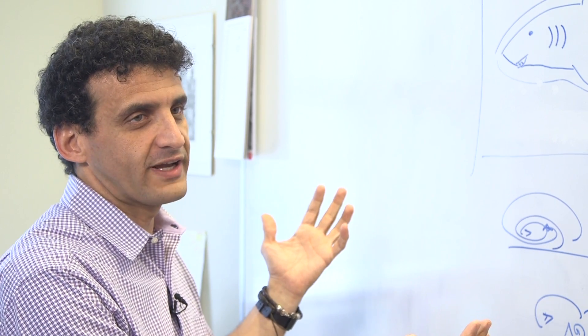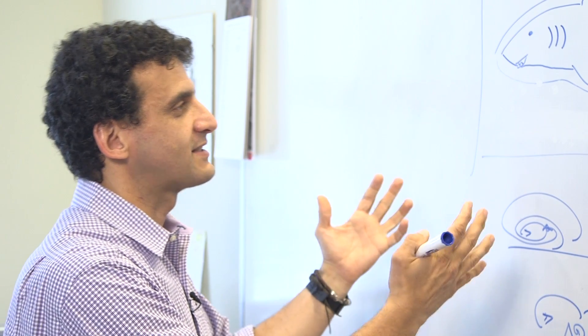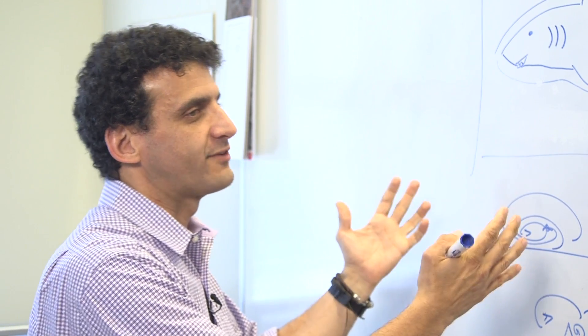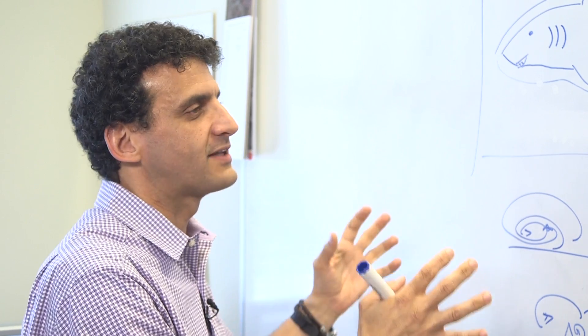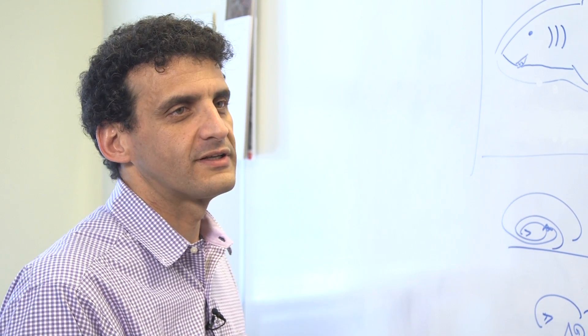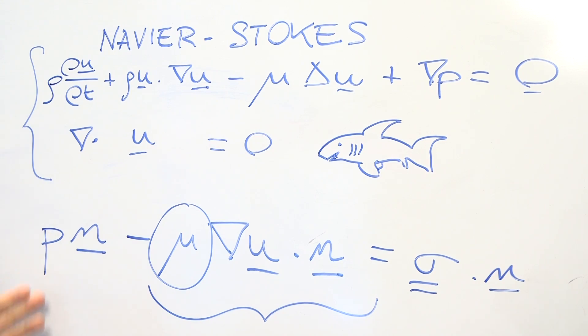Mathematics is the common language of nature, so if you understand something, if you create something in one field, then you can take advantage of this experience in another field. So these are the equations underlying the mathematics of shark skins.